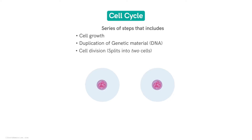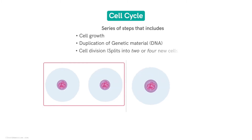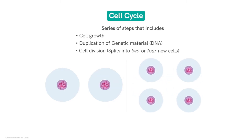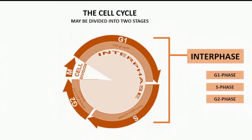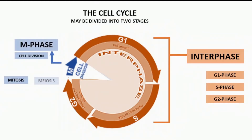In other words, the cell processes through various steps in order to grow, duplicate its DNA, and finally split into two or even four new cells. This is the cell cycle. The cell cycle may be divided into two stages: first, we have the interphase, which includes the G1 phase, the S phase, and the G2 phase; and the second stage is the M phase, also known as cell division, which includes mitosis or meiosis.